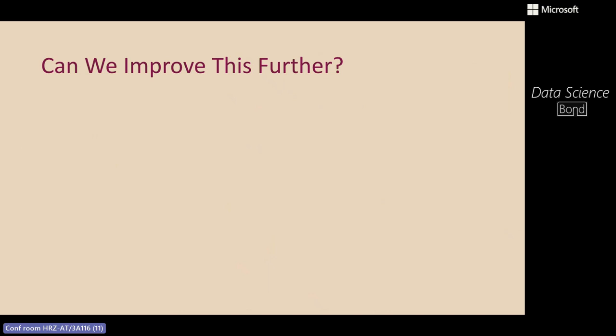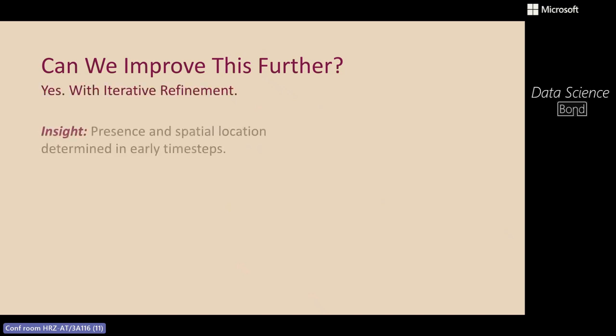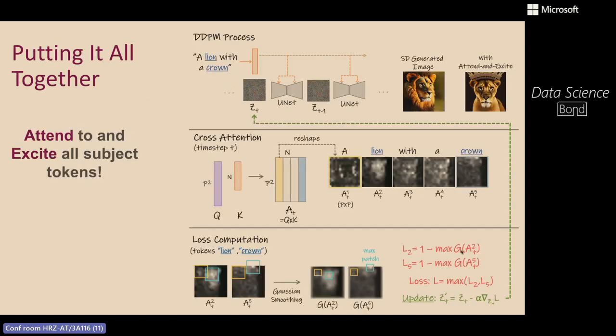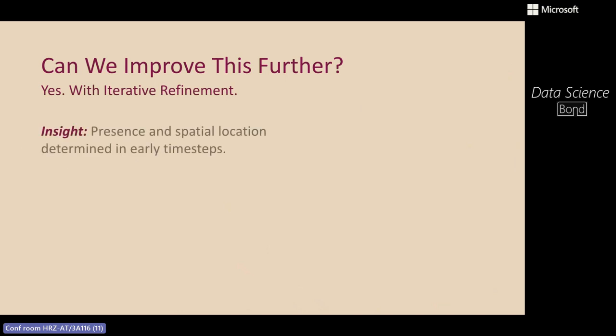A question that arises: what do we do if there are more than two subjects? Some prompts can have five, ten, or twenty subjects. Our loss function attends to the maximally neglected token. If we leave it as-is, the process might only encourage the most neglected subject but ignore others. There could be multiple neglected subjects. We address this with iterative refinement: compute the loss, compute the shifted latent, compute the loss again, and ask — is the loss low enough, meaning are all subjects attended to?